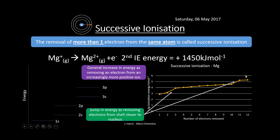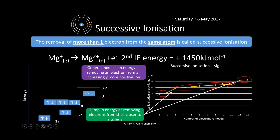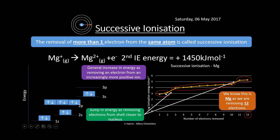It jumps again because we're having to remove electrons from the 1s orbital, which is very close to the nucleus, so that takes a lot more energy. The general trend is that it increases — it takes more energy because we're removing electrons from something that's increasingly more positive and getting closer to the nucleus. We know this is magnesium because we're removing 12 electrons in total.